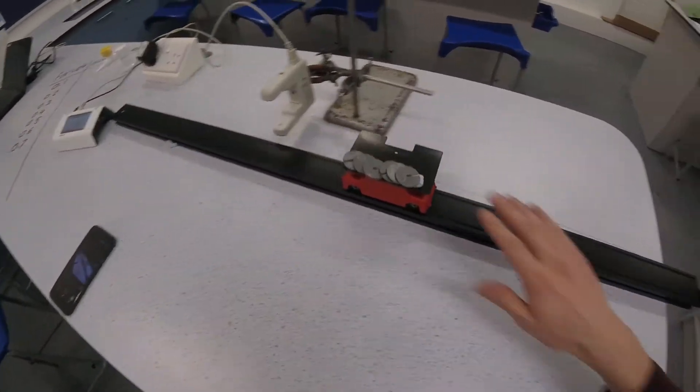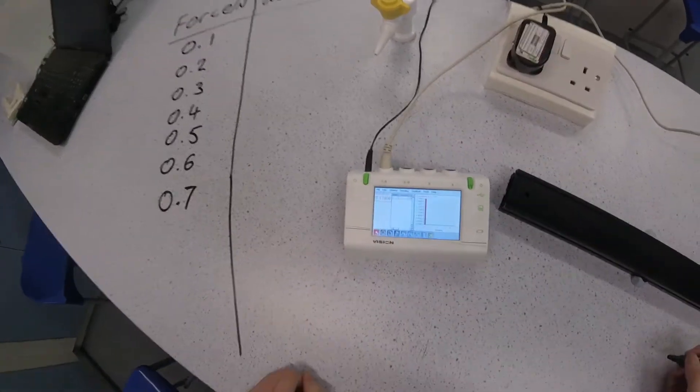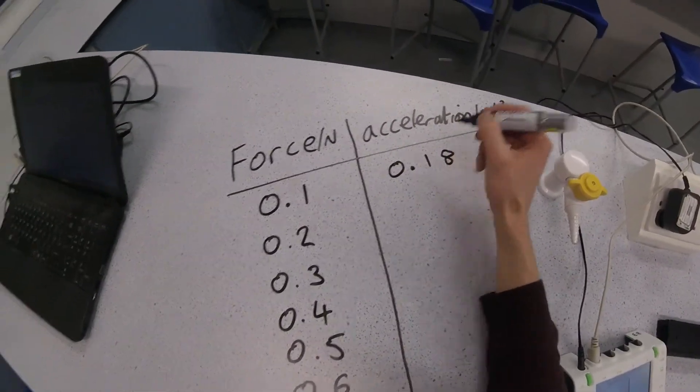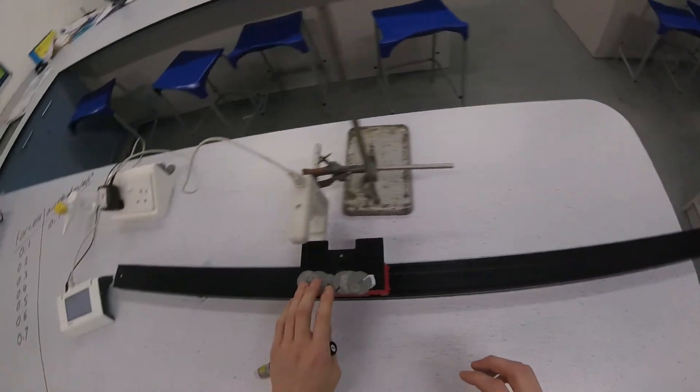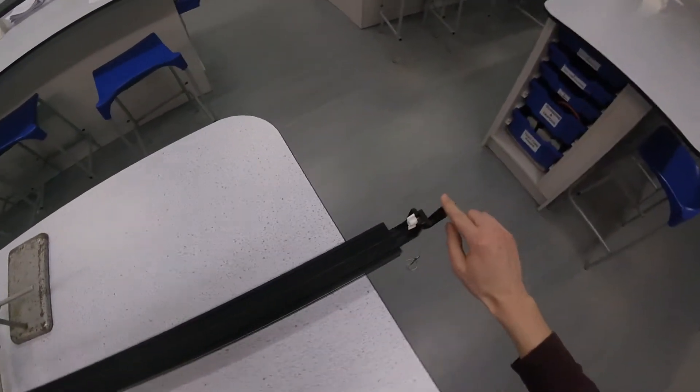It accelerates through the light gates, 1 newton. We can see from the screen we get 0.18 meters per second squared of acceleration. So every second the car is going to get faster by 0.18 meters per second.